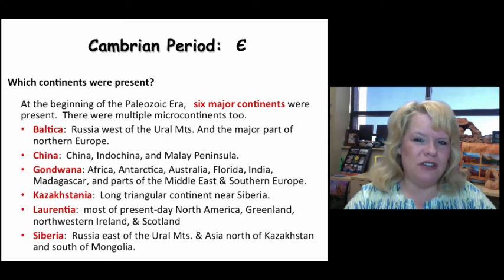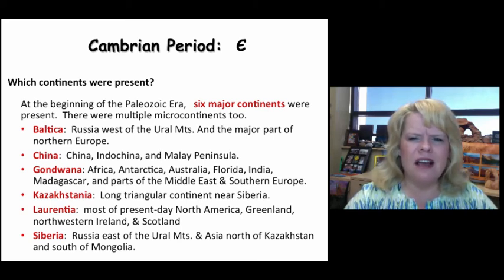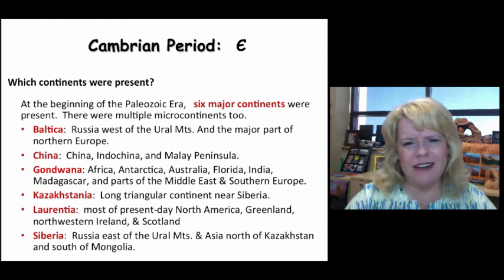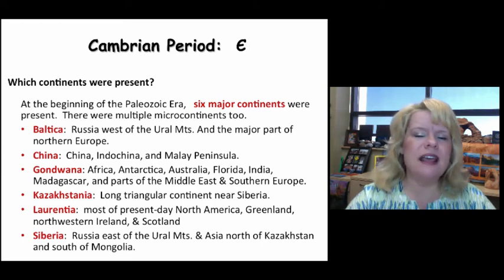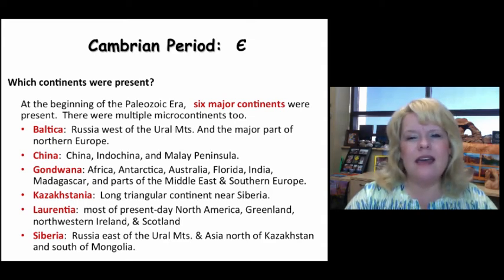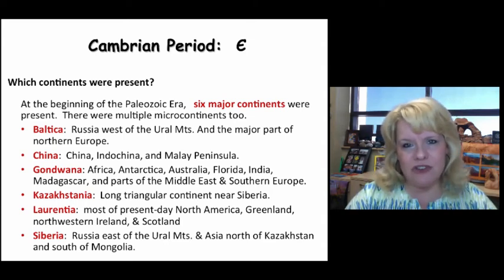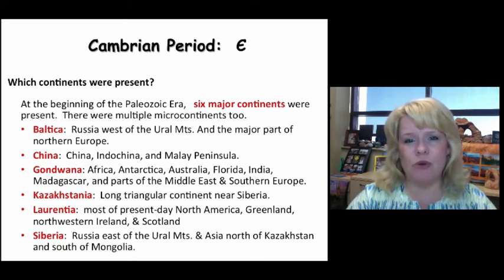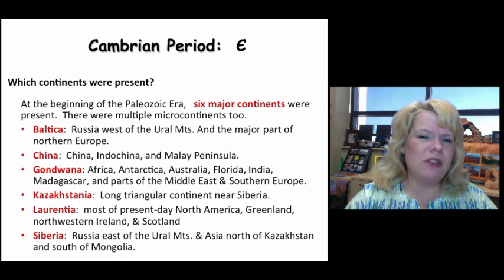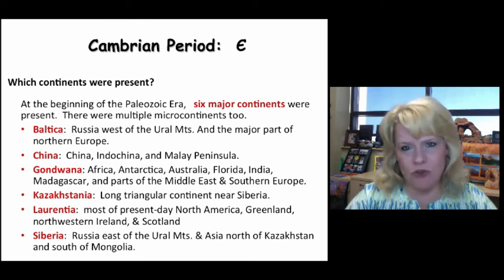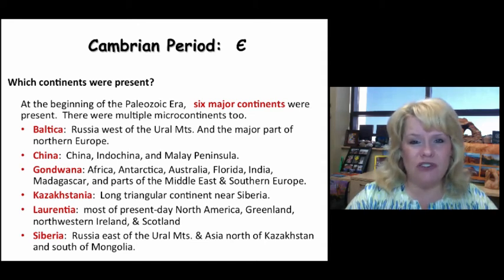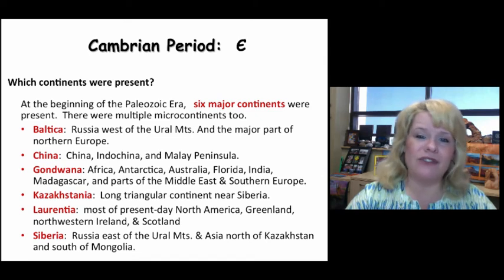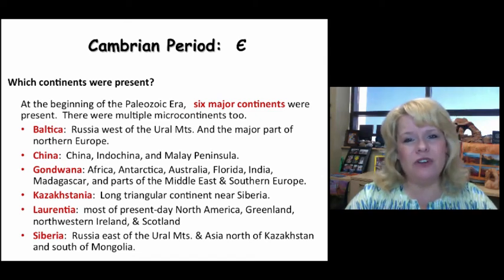One of the first things we need to recognize when studying each period is that there are basically two different sets of things we look at. First is paleogeographic information — what does that mean? It means we look at the basic orientation and location of the continental bodies present at that time. Some of the continents aren't going to be recognizable compared to what we know today because they've changed their location dramatically due to plate tectonics.